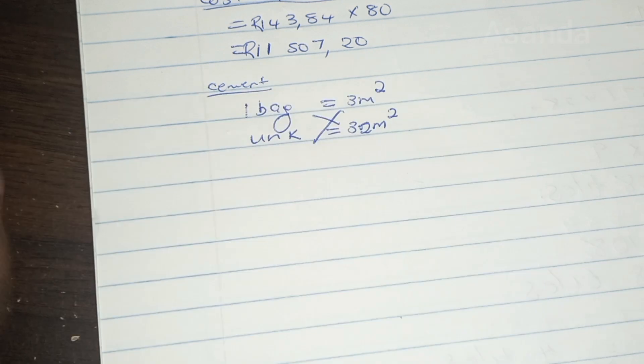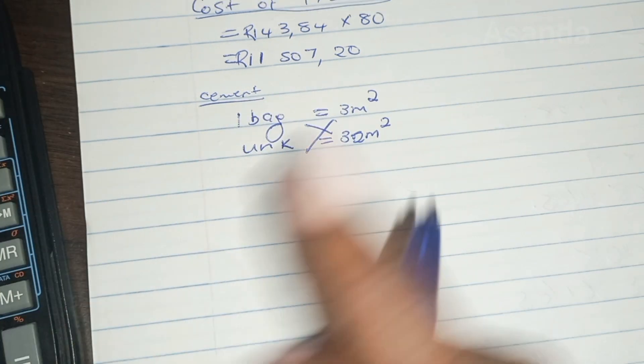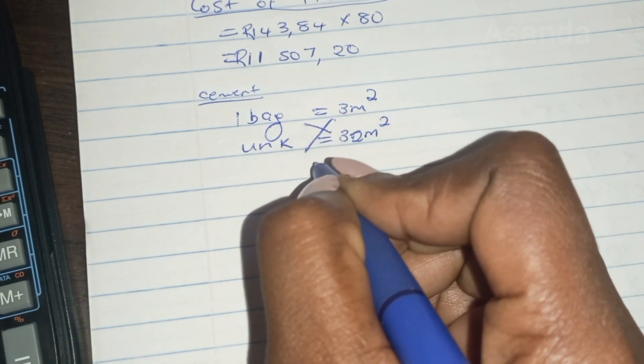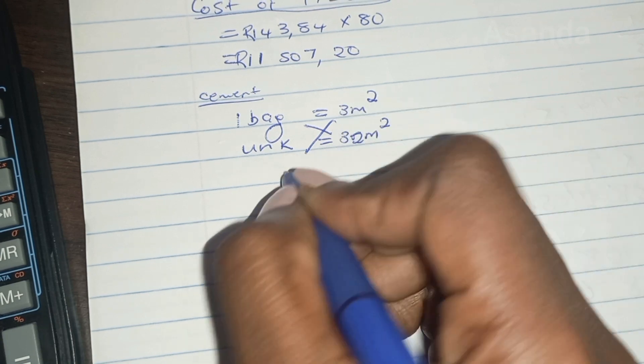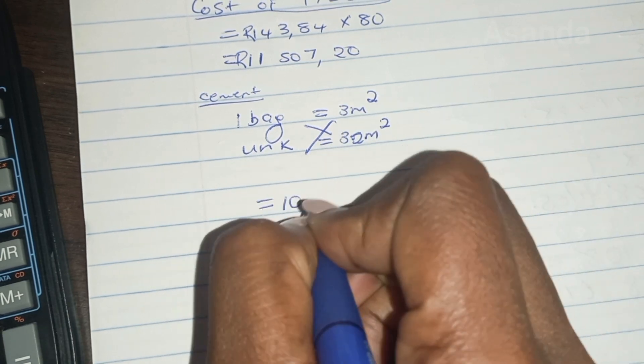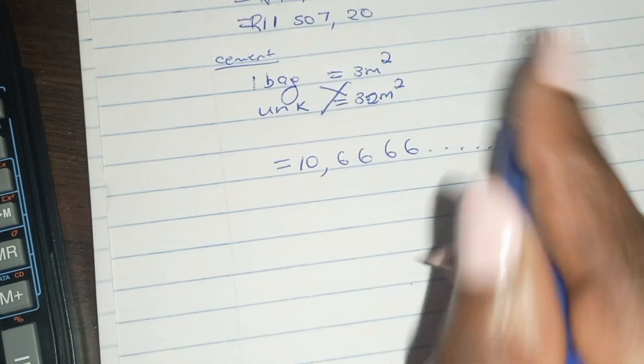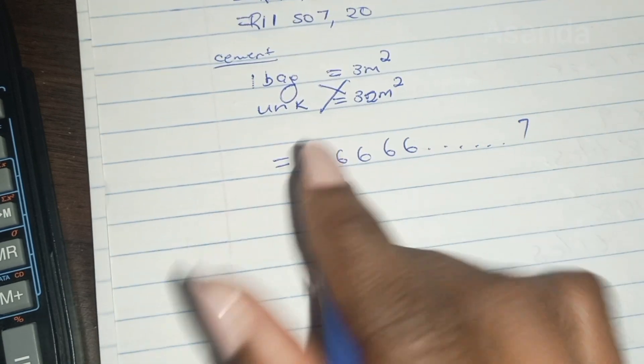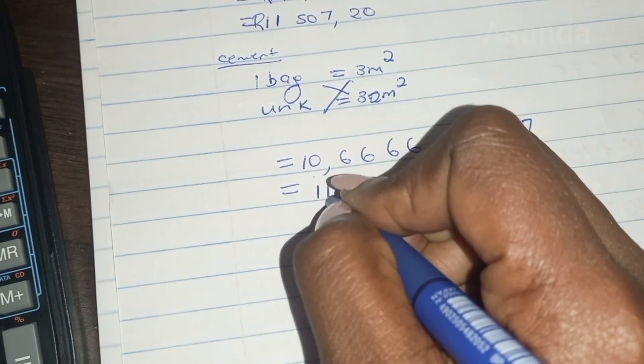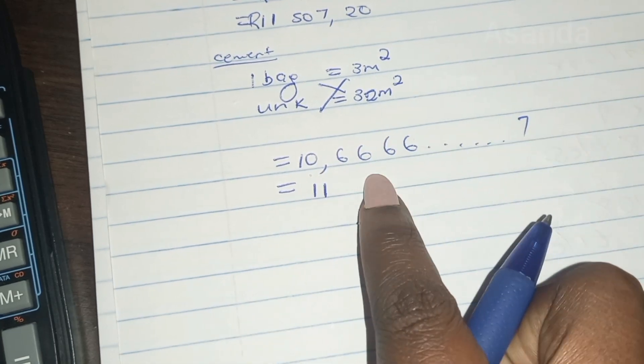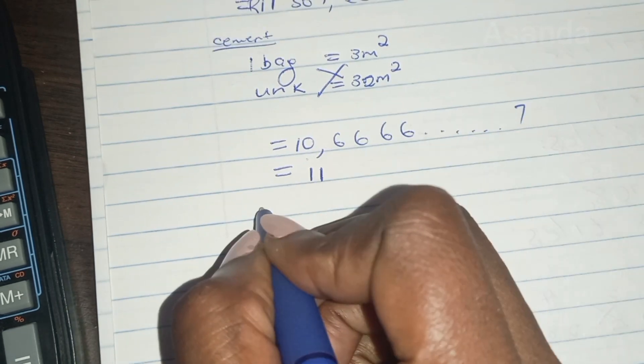So we're going to cross multiply. And in the end, we're going to get 32 divided by 3. And that is going to be... The answer there is 10.66667. So we're going to say... I'm going to say round off and get how many bags? 11 bags. We can't buy 10. It won't be enough. There's that bag that we're not going to finish, which is 0.6 part of it. We need 11 bags.